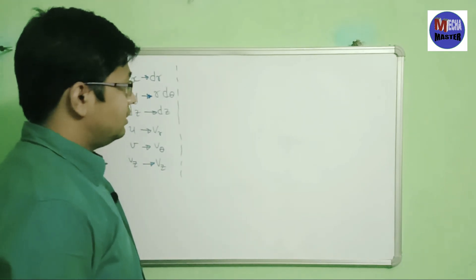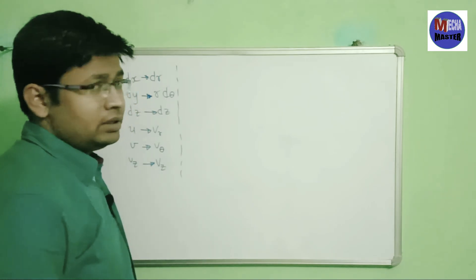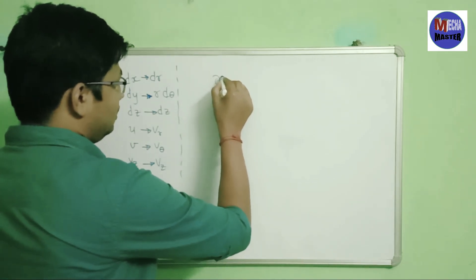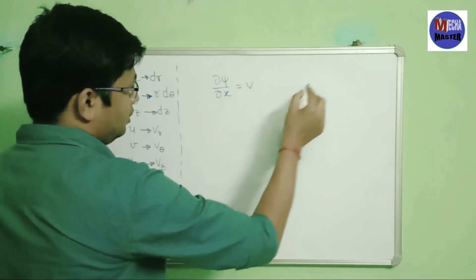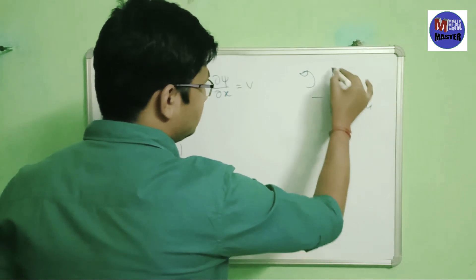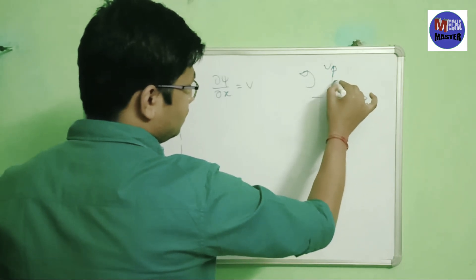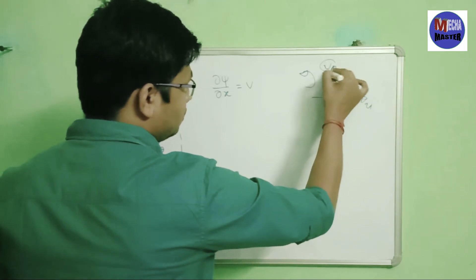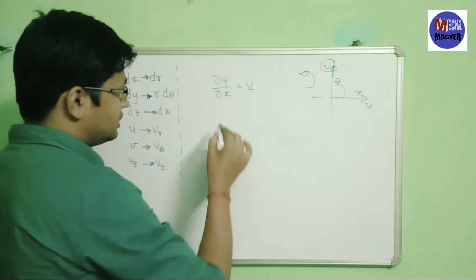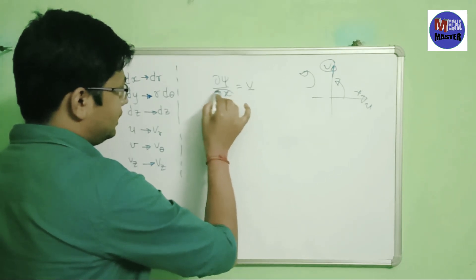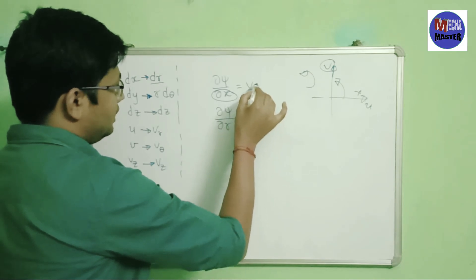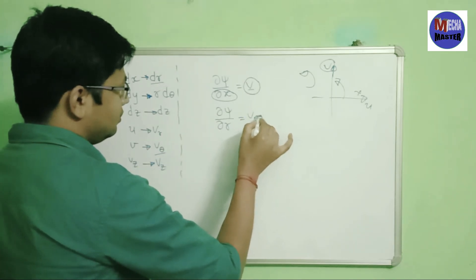Now I will change another equation — the velocity potential function and stream function. In the Cartesian coordinate system, the stream function gives del ψ upon del x equals to v, when going in the anticlockwise direction (u in x-direction, v in y-direction). To change to polar coordinates, on the place of del x write dr, and on the place of v write vθ.